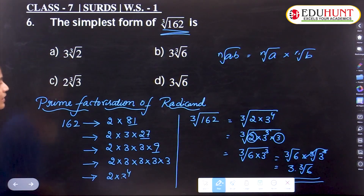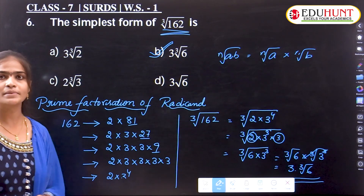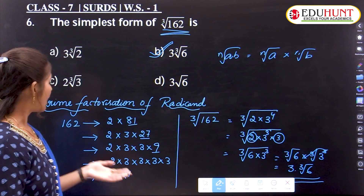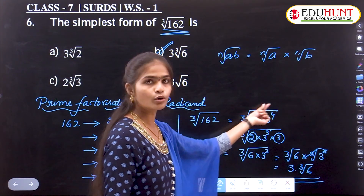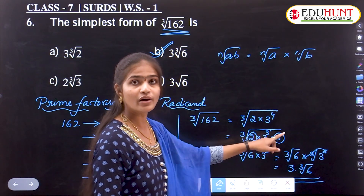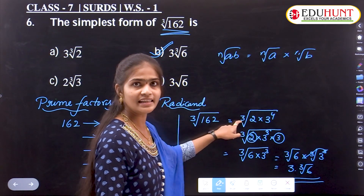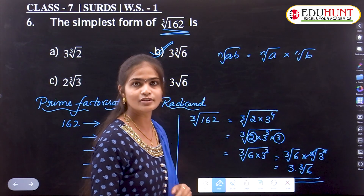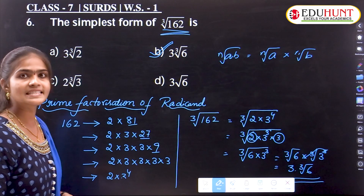So the answer is 3·∛6. To summarize: first take the prime factorization of the radicand, then split the power to match the order of the surd — here the order is 3 — so we write 3⁴ = 3³×3, and then cancel the cube root with the cube.